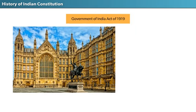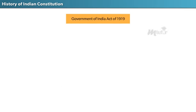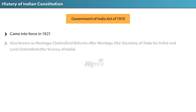The next Act was the Government of India Act of 1919. On August 20, 1917, the British government declared for the first time that its objective was the gradual introduction of a responsible government in India. The Government of India Act of 1919 was thus enacted and came into force in 1921. This Act is also known as the Montagu-Chelmsford Reforms, after Montagu, the Secretary of State for India, and Lord Chelmsford, the Viceroy of India.